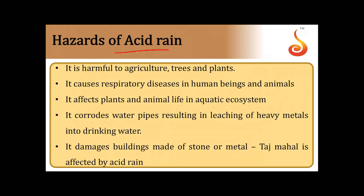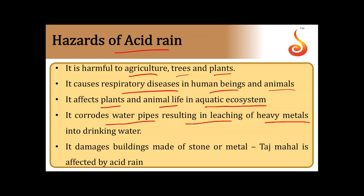The harmful effects of acid rain include: damage to agriculture, trees, and plants; respiratory diseases in humans and animals; harm to plant and animal life in aquatic ecosystems; corrosion of water pipes causing leaching of heavy metals into drinking water; and damage to buildings made of stone and metal. A notable example is the Taj Mahal being affected by acid rain.